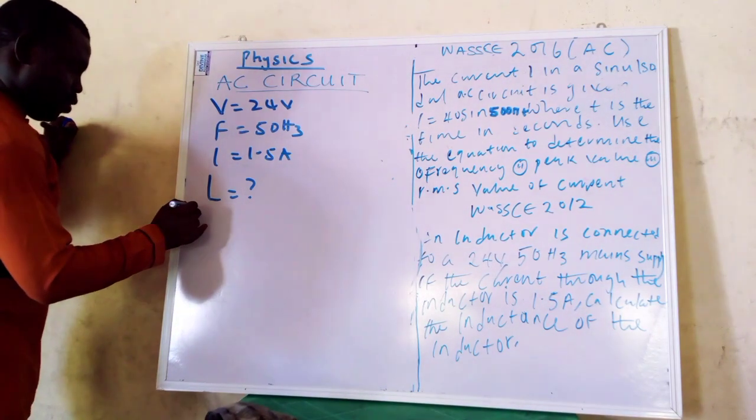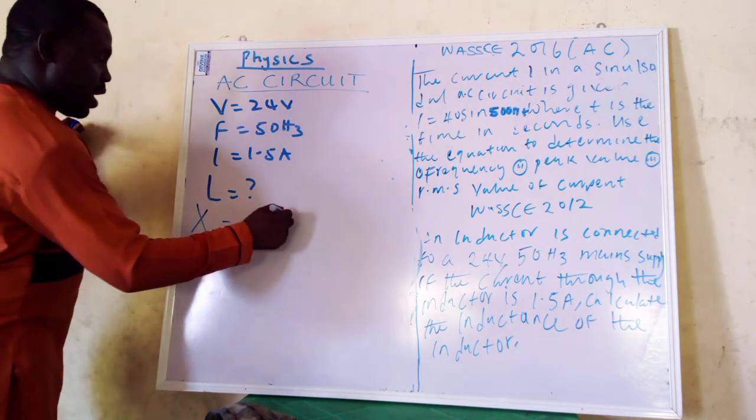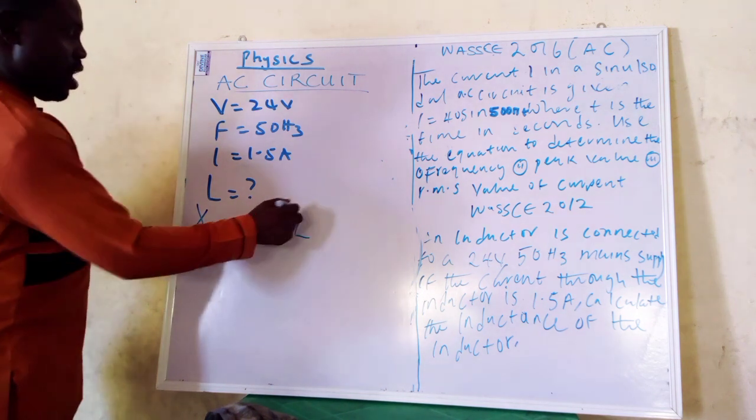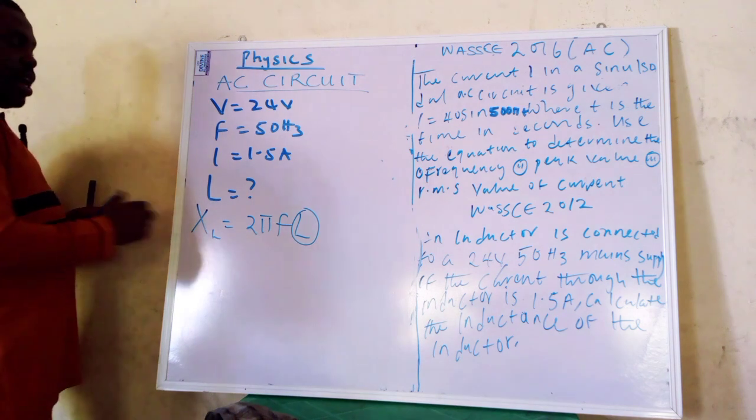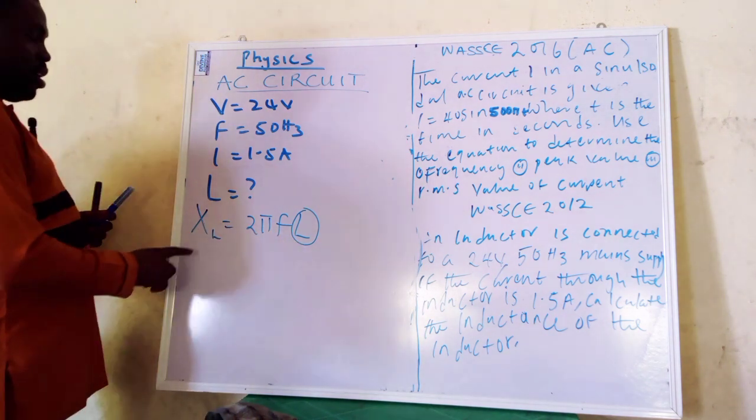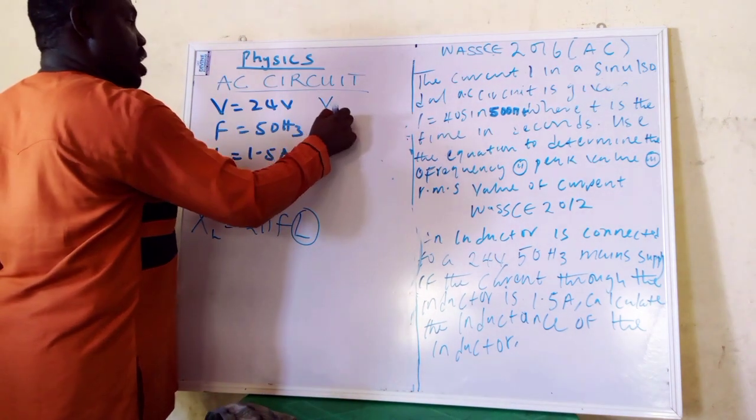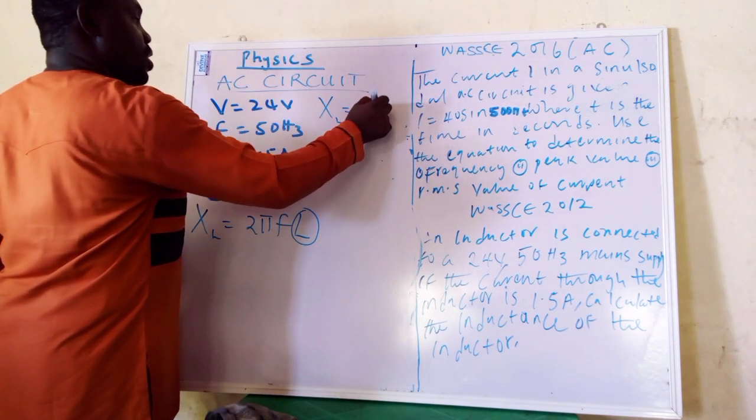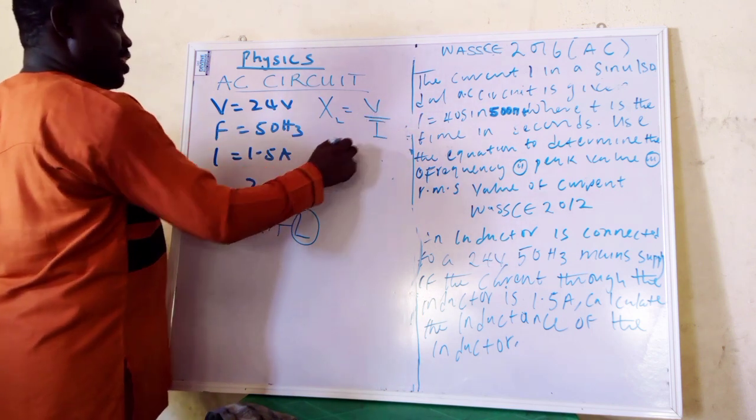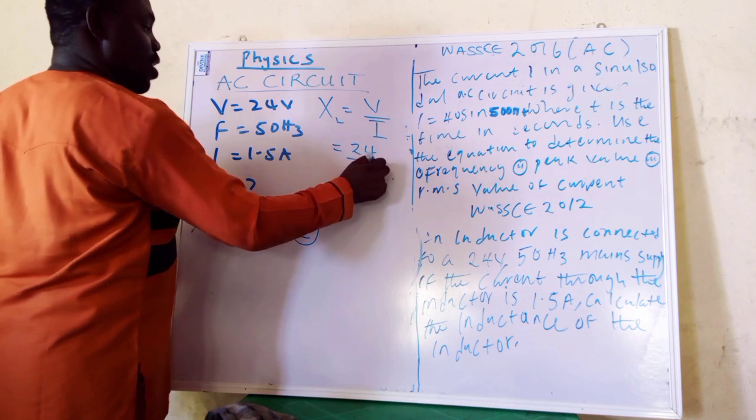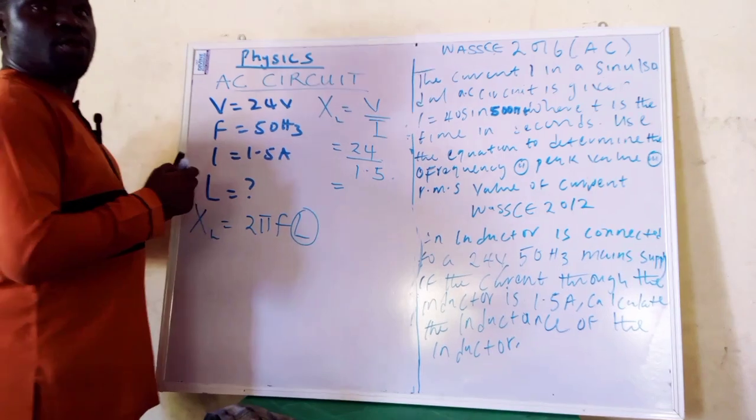Now, where are we coming from? We know that XL is 2πfL. And this is the L we are asked to find. So, if we are asked to find L, we don't even know this. So, we'll have to say XL now equals V over I. You remember this formula? Thank you. It shows that we are on track.